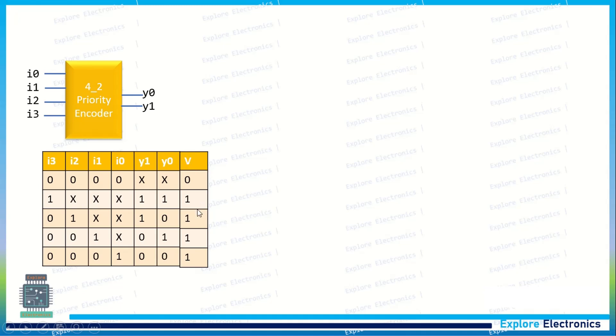When i3, i2, i1, i0 are zeros, it means it is an invalid encoding. That's why output is zero and valid signal is zero, and output can be don't care.